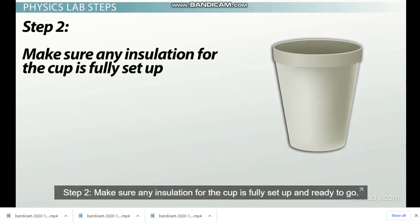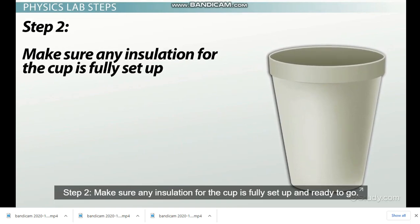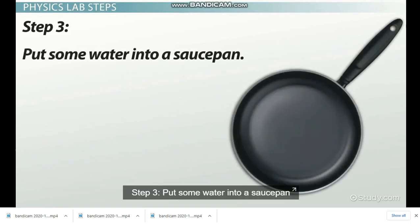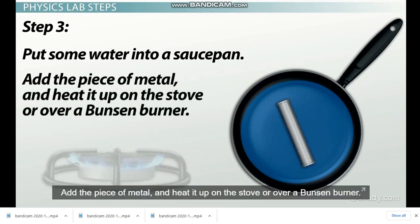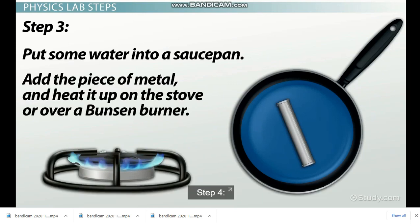Step 2: Make sure any insulation of the cup is fully set up and ready to go. Step 3: Put some water into the saucepan. This is separate from the water in the cup. Add a piece of metal and heat it up on the stove or over a Bunsen burner.